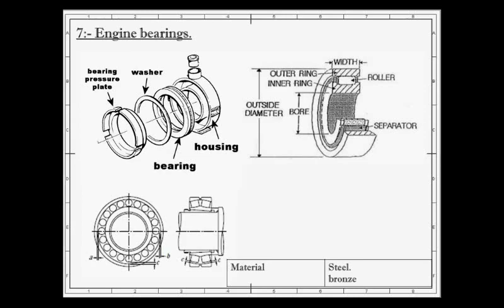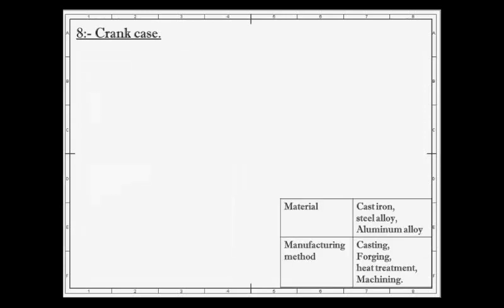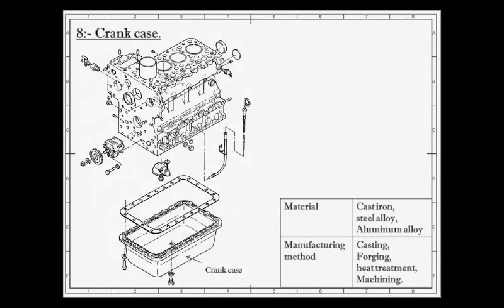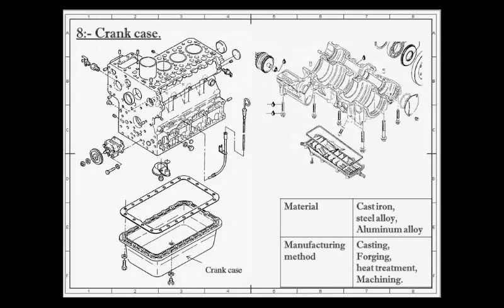Next is crankcase. The main body of the engine to which the cylinders are attached and which contains the crankshaft and crankshaft bearings is called crankcase. It serves as a lubricating system too and sometimes it is called oil sump. All the oil for lubrication is placed in it.